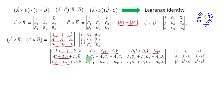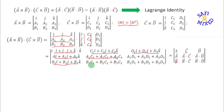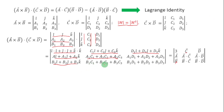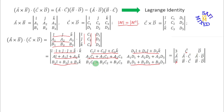Now if I carefully look at the remaining four elements: one is the scalar product of vector a and c, one is the scalar product of vector a and vector d, one is the scalar product of vector b and vector c, and one is the scalar product of vector b and vector d. So I write these as a dot c, a dot d, b dot c, and b dot d.